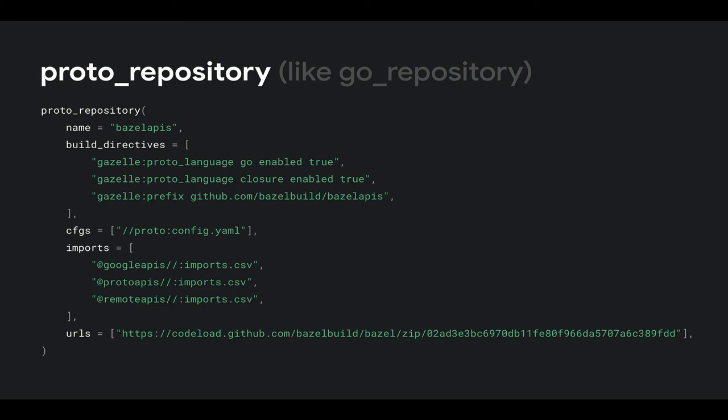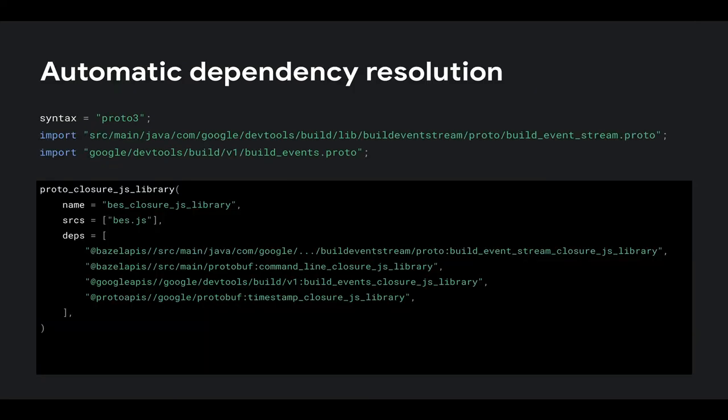When we apply this to the Bazel build repository — referencing Google APIs, remote APIs, proto APIs — we can do this: you create a proto file and you just drop in an import statement for something like source main Java, build event stream proto, which is a fairly complex proto dependency. Gazelle figures out the rest. This is nice because it saves you a bunch of time — you can spend a fair amount of time trying to figure this out independently, and I've definitely spent some time doing that.